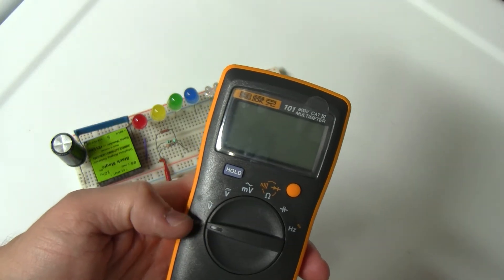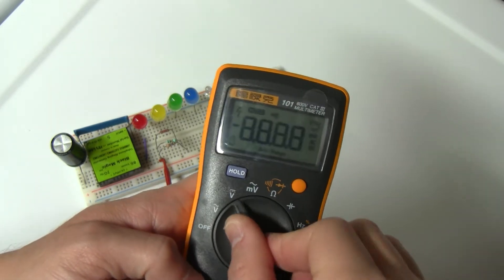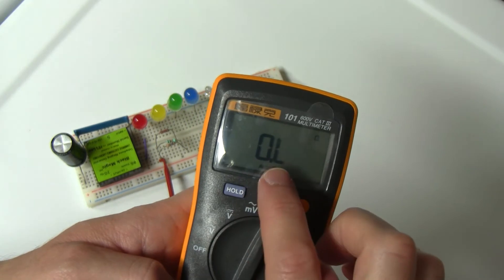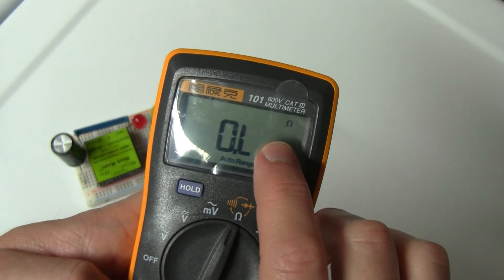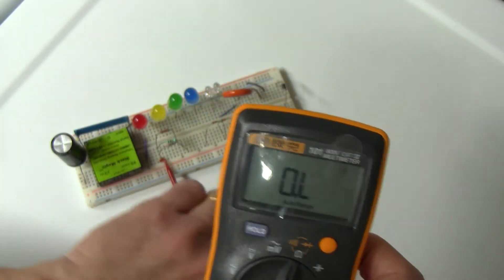Hi, this is just to show the issue that I have with the Fluke 101. When I turn on to the ohms range, it says overload but there's no multiplier on the ohms symbol.